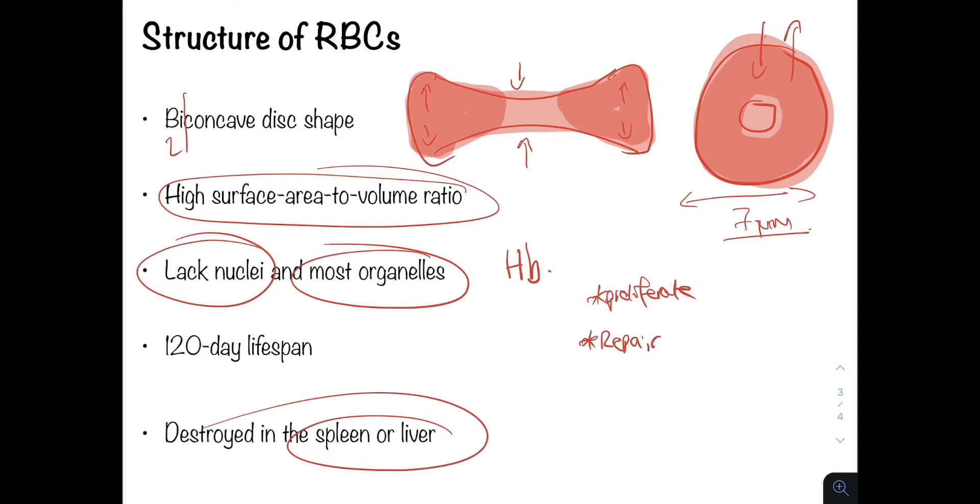Red blood cells have a lifespan of 120 days, and red blood cells are usually produced at around 1% per day, so 1% of the red blood cells are replaced per day.